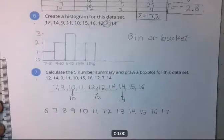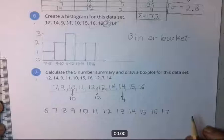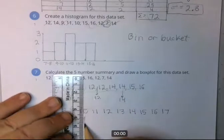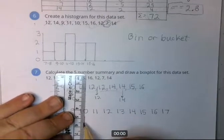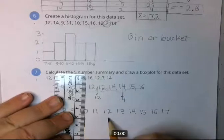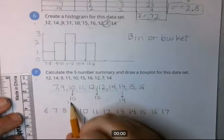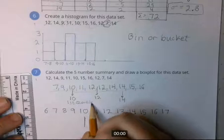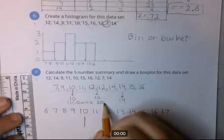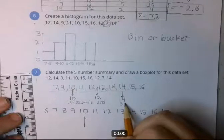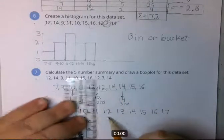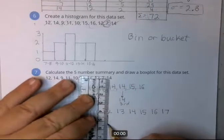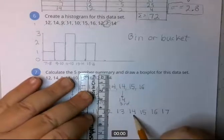Okay, so now the way you draw a box and whisker plot is really what it's called is you take the 10, the 12, and the 14. You draw a vertical line right here. That's at your, and this is called the first quartile.